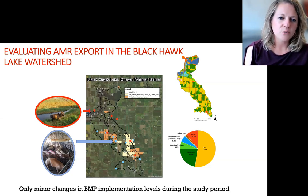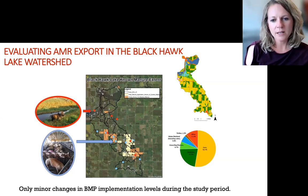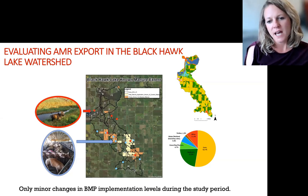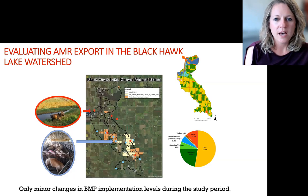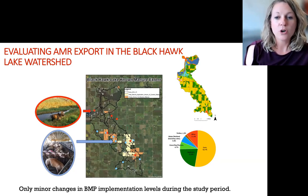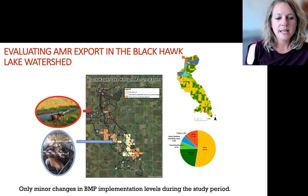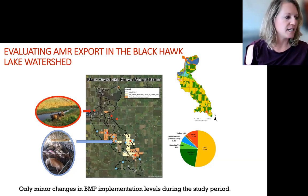From this figure, the red dots are beef manure facilities and the blue dots are swine manure facilities. We've also estimated areas that previously received manure application or currently receive it, shown in dark brown. To date, there have been relatively minor changes in the level of implementation of management practices over the study period.